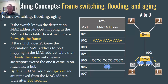Let's look at our bullet points on frame switching, flooding, and aging. If the switch knows the destination MAC address-to-port mapping in the MAC address table, then it switches or forwards the frame. If it doesn't know the destination MAC address-to-port mapping, it floods the frame out of every switch port except the one it came in on — much like a hub. By default, MAC addresses age out and are removed from the MAC address table after 300 seconds.